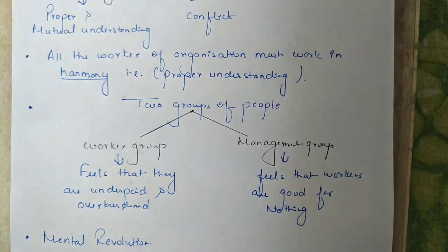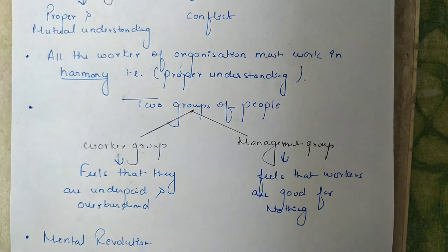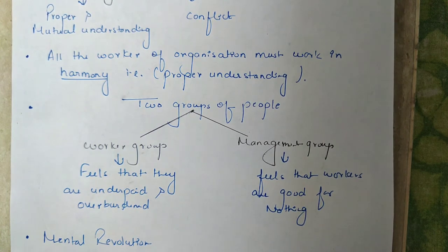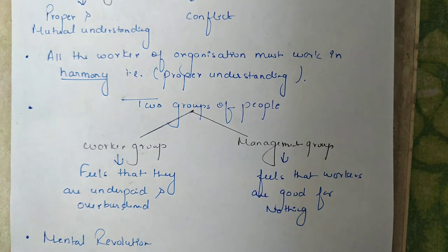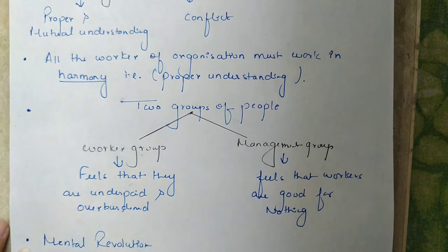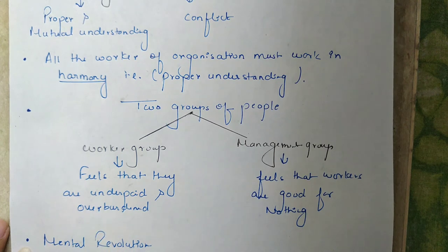Taylor also insisted on mental revolution, which is a complete change of attitude and outlook for each other. Subordinates will show their best potential only when they receive the best guidance from the manager, and the manager will lead to success only if they get support from subordinates. For example, in Japanese companies, managers treat workers as part of their family and the workers do not show protest by going on strike.